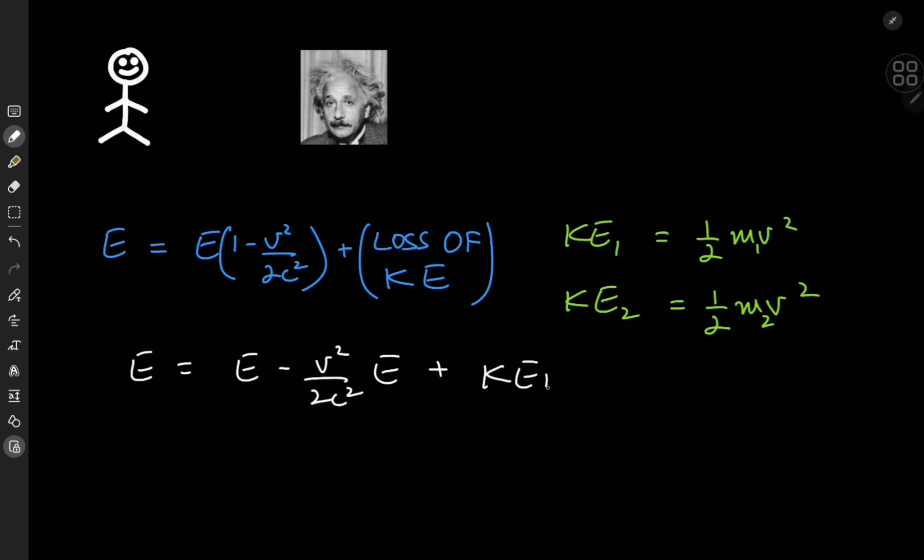So the E's cancel out and we have 0 equal to negative v squared by 2c squared times E plus factoring out the one half and the v squared terms,